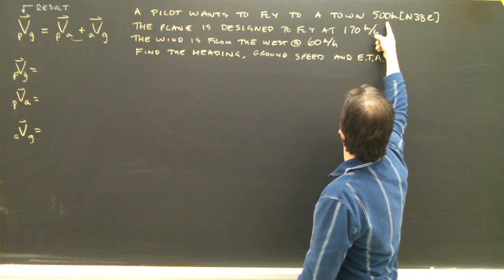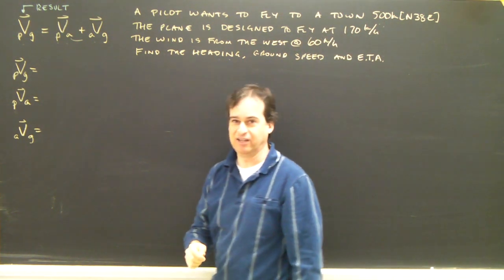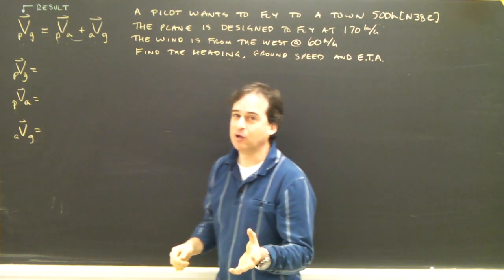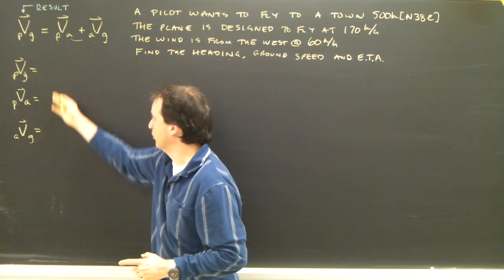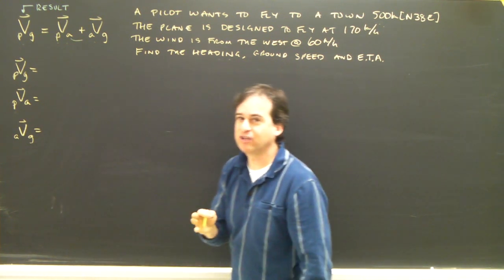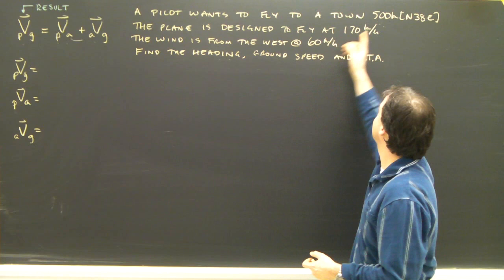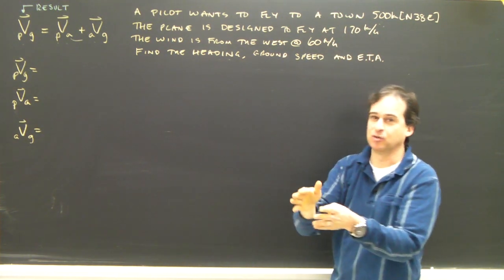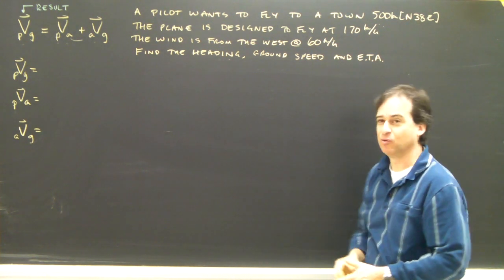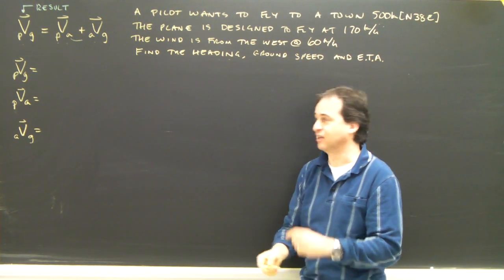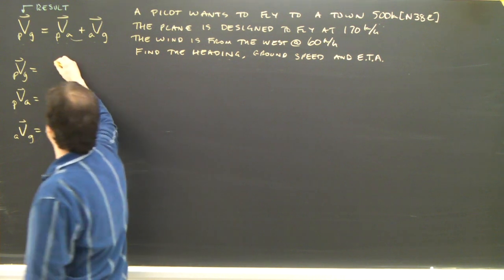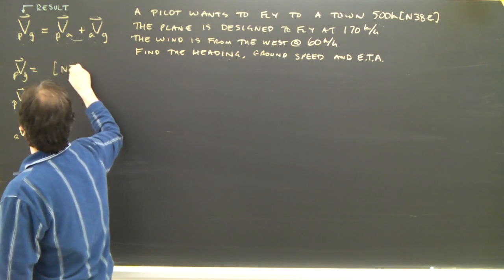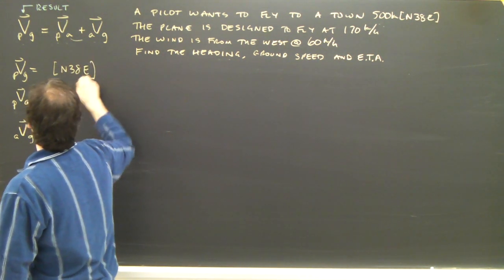A pilot wants to fly to a town 500 kilometers north 38 east. Well, the 500 kilometers is a distance, it doesn't belong anywhere in here. But the north 38 east, the plane has to end up flying in that direction. After the wind is blowing, the plane is going to fly one way, the wind is going to push it. In the end, it must end up going north 38 east, or it's not going to get to that town. So the plane relative to the ground, the result, must be north 38 east.